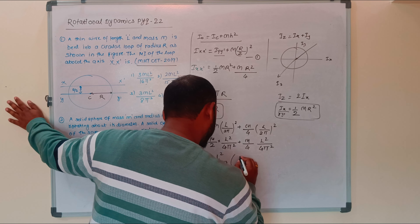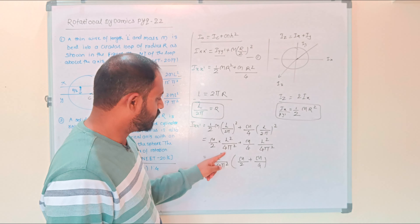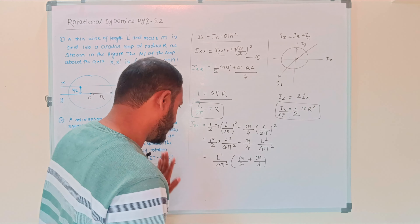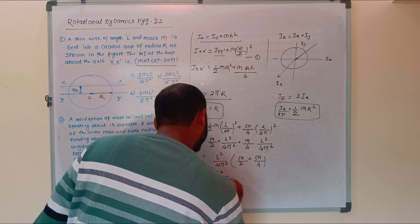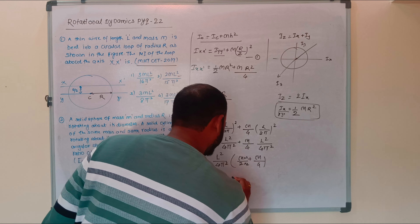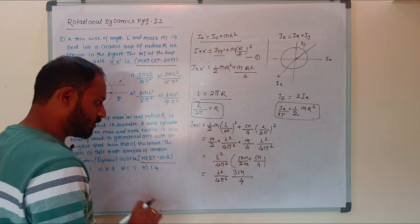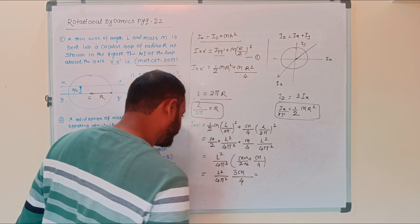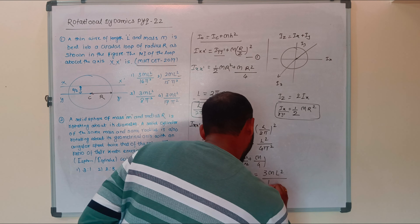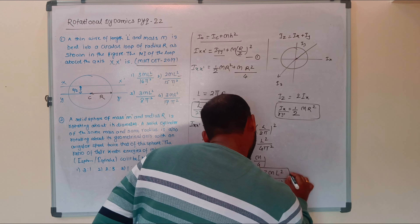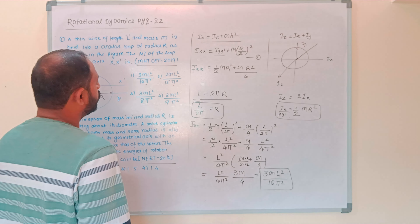Taking L²/(4π²) as common, we get L²/(4π²) × (M/2 + M/4). Simplifying M/2 + M/4 gives 3M/4. Therefore the result is 3M L² / (16π²).